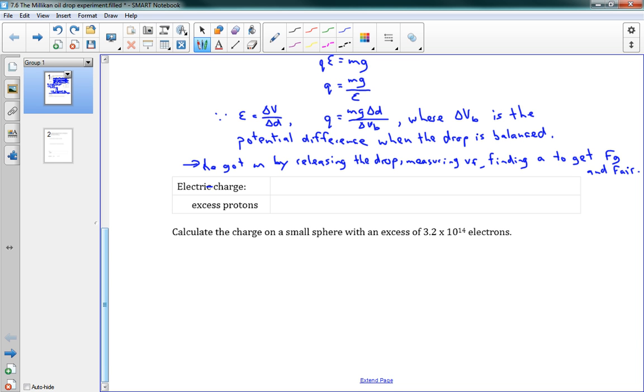And so here, I've actually written electric charge, I meant to write elementary charge. Elementary. So the elementary charge E is equal to 1.602 times 10 to the negative 19 Coulombs. And we've used that a few times already. That is what he found using his oil drop experiment. Nobody had found that before.